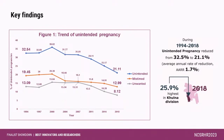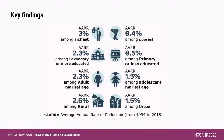This is the trend of unintended pregnancy. We can see a downward trend, as we expected. The trend starts at 32.5% and goes down to 21.1%, with an average annual rate of reduction of 1.7%. In 2018, we find that 25.9% unintended pregnancy was reported in Kulna division, which was highest. The annual average rate of reduction was 3% among the richest, whereas it was only 0.4% among the poorest — a vast gap.